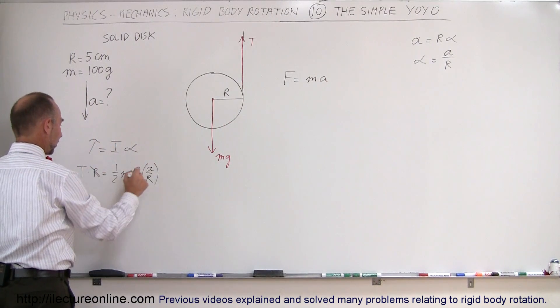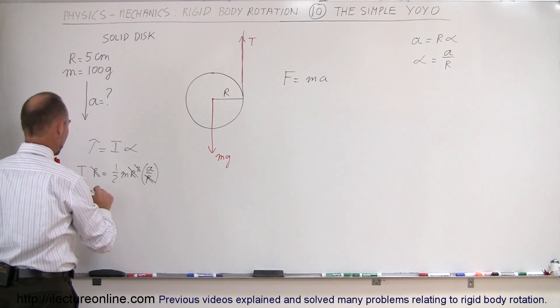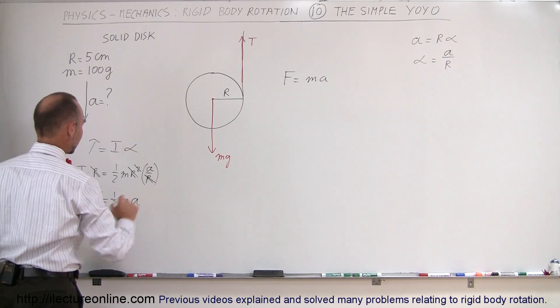You can see here that this R will cancel out one of those, and this R will cancel out the other one, so the R's disappear, and we have the tension in the string is equal to one-half mass times the acceleration.